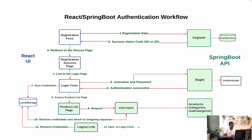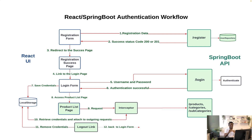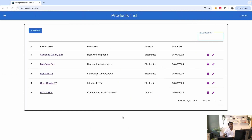That is basically how the React Spring Boot authentication workflow works. In the next part, we are going to implement the registration form, the registration success page, the login form, and then go to Spring Boot to create the slash login URL that checks the validity of the username and password. We'll also implement the logout functionality to remove credentials from local storage and redirect the user to the login page. Please subscribe, like, and leave a comment if you have any questions.